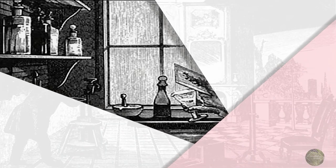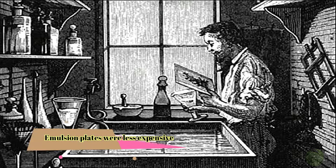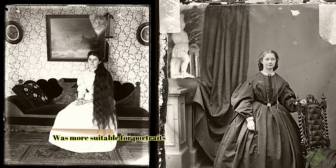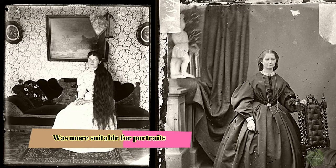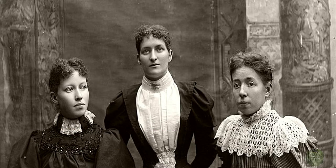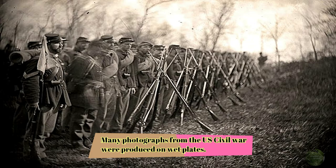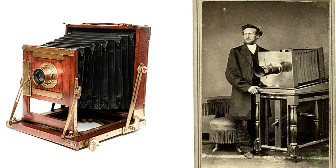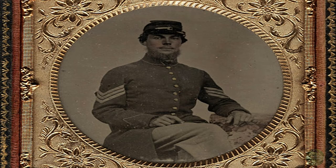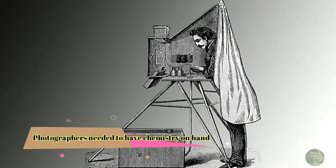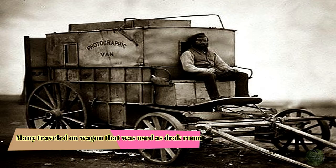Emulsion plates, or wet plates, were less expensive than daguerreotypes and required only two or three seconds of exposure time. This made them much more suited to portrait photographs, which was the most common use of photography at the time. Many photographs from the Civil War were produced on wet plates. It was during this time that bellows were added to cameras to help with focusing. Two common types of emulsion plates were the ambrotype and the tintype. Photographers needed to have chemistry on hand, and many traveled in wagons that doubled as a darkroom.